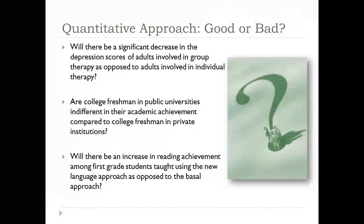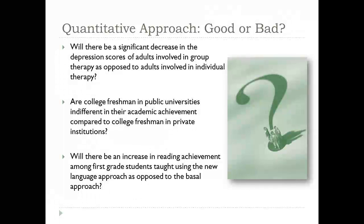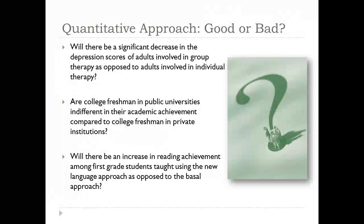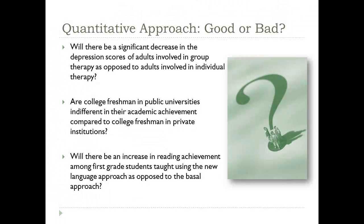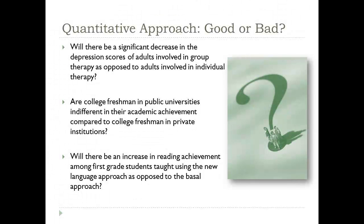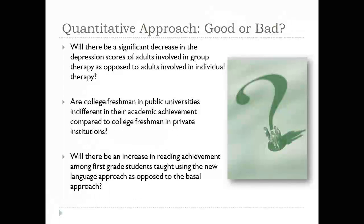We're going to look at examples and ask: are these good or bad, based on the criteria we just reviewed? The first question is: 'Will there be a significant decrease in the depression scores of adults involved in group therapy as opposed to adults involved in individual therapy?' This is a fairly good question. The dependent variable is depression scores, the independent variable is the type of therapy, and the population is adults — specific enough overall.